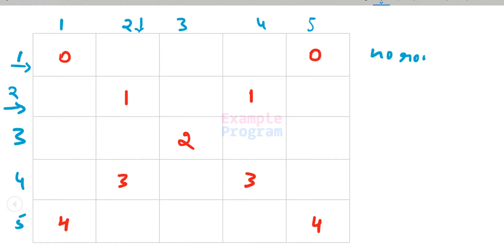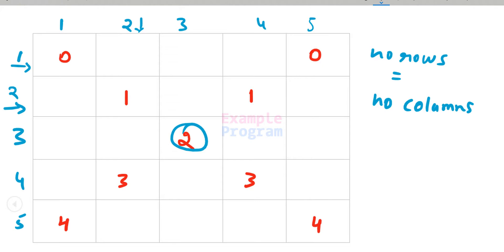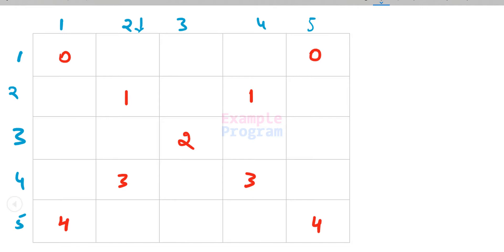One thing we can notice is that in this pattern the number of rows is equal to the number of columns. Also, if we have an odd number of rows and odd number of columns, the pattern will look complete. That's because in the center we can have a number which makes the pattern complete. So whenever we print this pattern, we will print it for an odd number of rows, starting the count from 1.